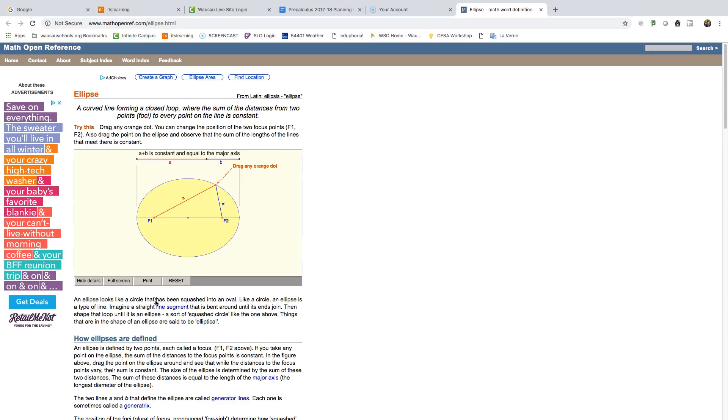So, as you can see here, if I drag this along, no matter where I am, the sum of A and B is always going to be the same. It's going to be a constant. And those two points, A goes from the point on the ellipse to the first foci, B goes from the point on the ellipse to the second foci. And that, adding those two distances together all the way around gives me the exact same distance, gives me the same length all the way around, okay. A and B are changing, but the sum is constant, okay.